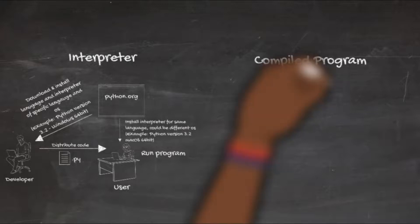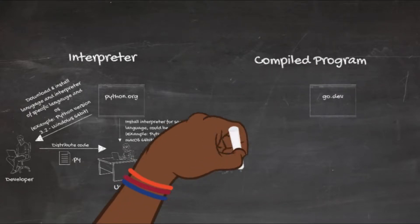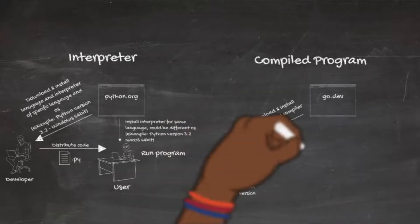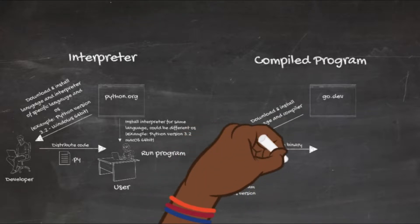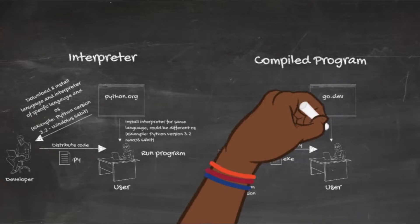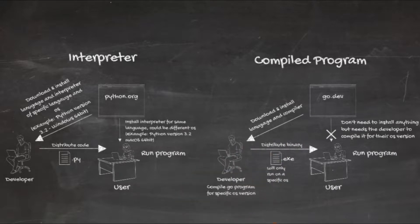For a compiled program, the developer installs a language and compiler specific to their OS, writes their source code, and then compiles it for a specific target operating system — which can differ from the one they're working on. For example, a developer on Windows 64-bit can pass an argument to the compiler to produce a Mac 64-bit binary. The user receives that binary and must have the matching OS version to execute it, but they don't need to install anything else — the code is already translated into the native language of their operating system.